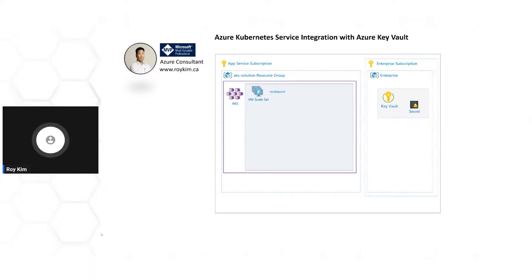Here's my demo architecture: I have an Azure subscription with an AKS solution. The AKS cluster has a VM scale set comprised of, let's say, three nodes. On the other side, there's a shared Key Vault or enterprise Key Vault as part of your shared services — that's one layout architecture, though not the only way. Sometimes you have a Key Vault in the same resource group as the AKS cluster.